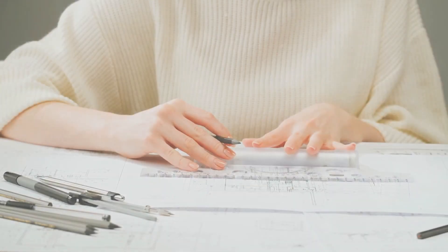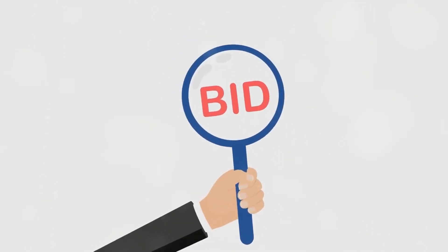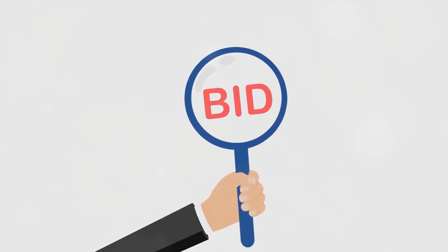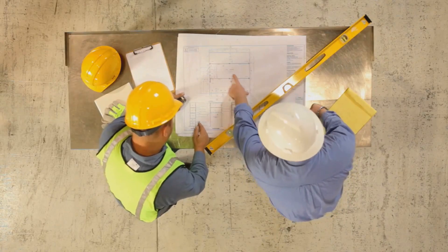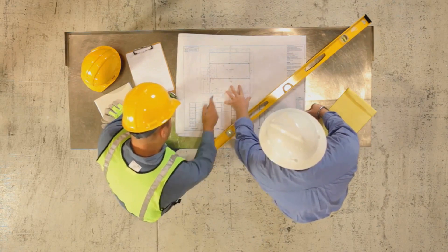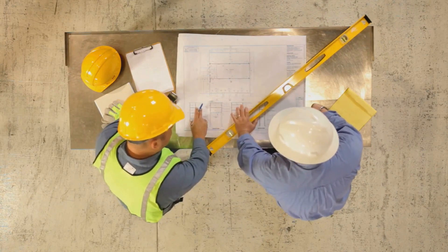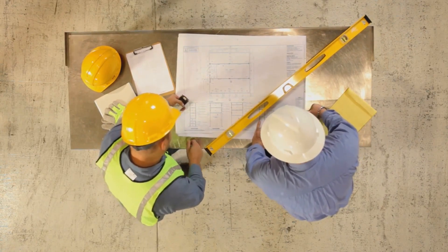Let's dive deeper into the bidding procedures. This is where competitive bidding and value-based selection come into play. Competitive bidding involves contractors submitting their bids based on the project's specifications, and the owner then chooses the contractor offering the best value. Value-based selection considers not just the price, but also the contractor's qualifications, experience, and ability to complete the project on time and within budget.